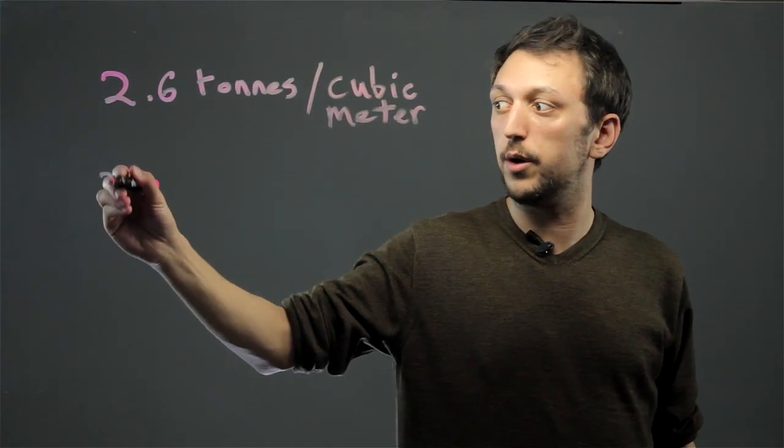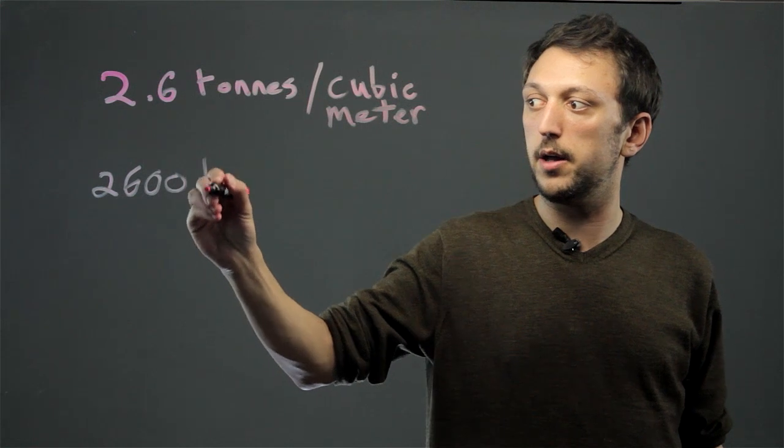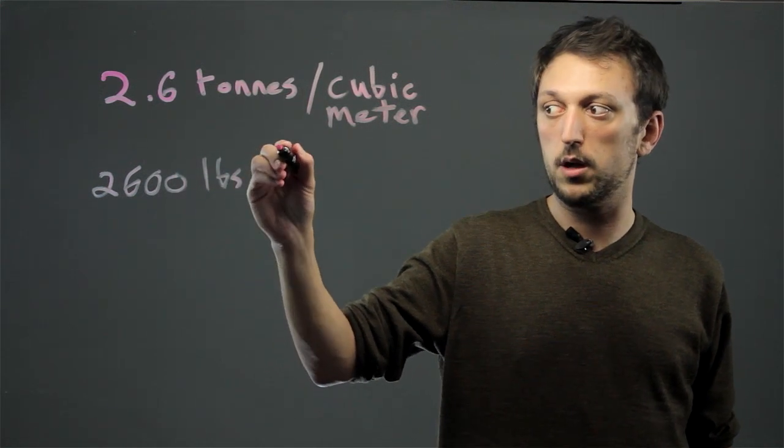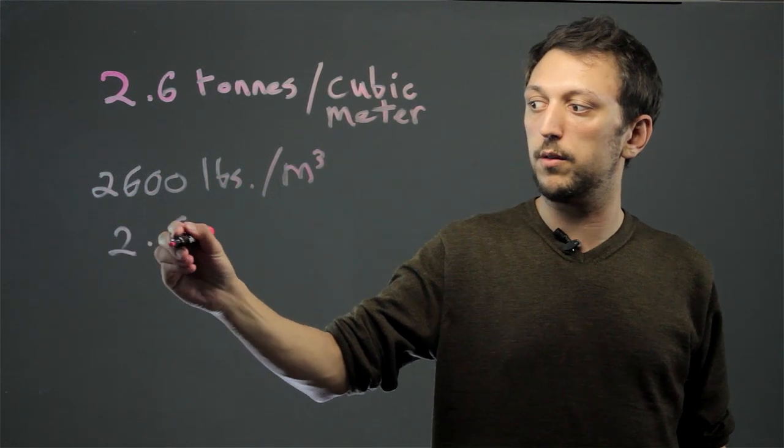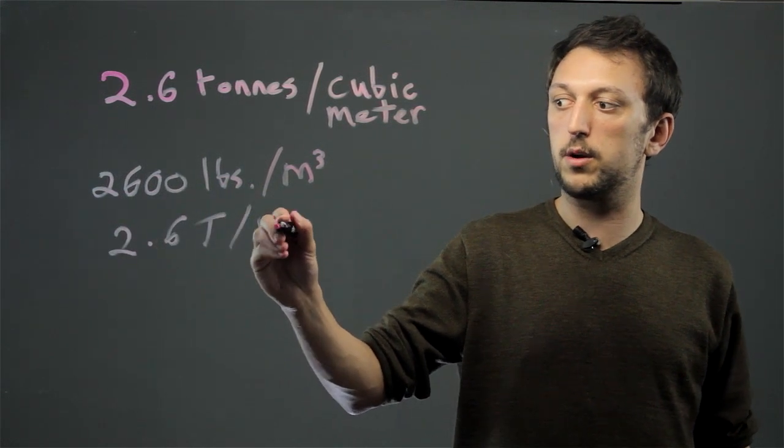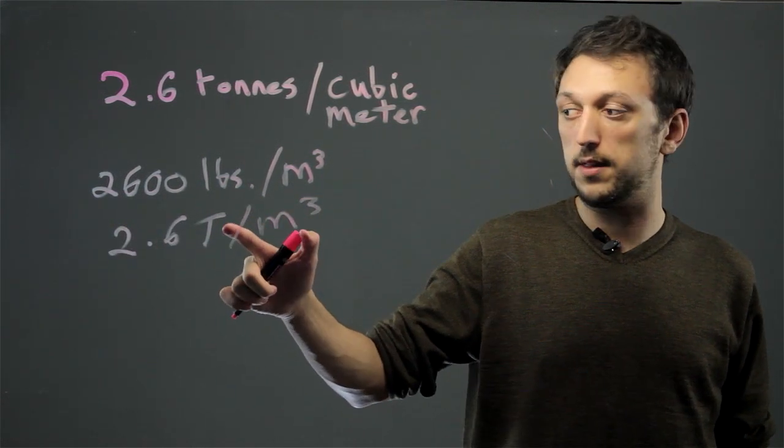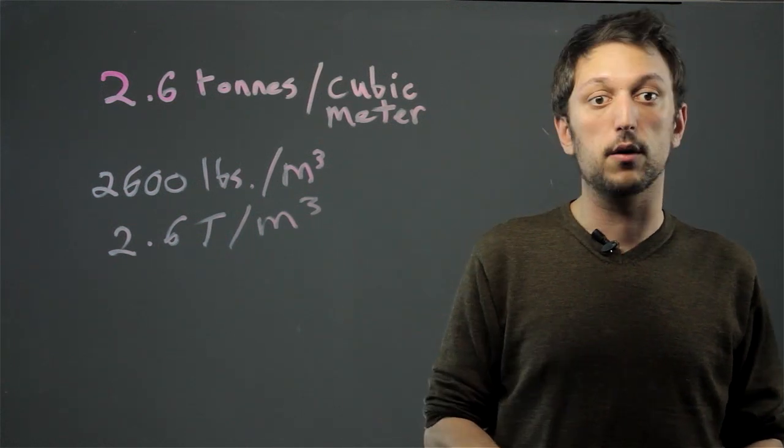So you can either put 2,600 pounds per meter cubed or you can say 2.6 T per meter cubed if you have a key that says that the T represents tons and not temperature or something else.